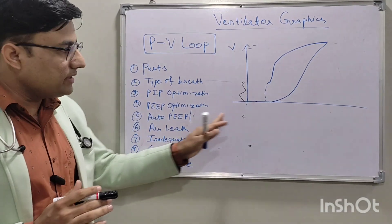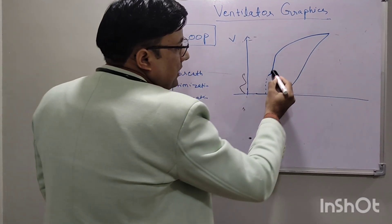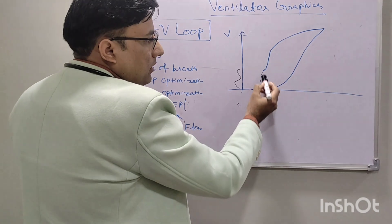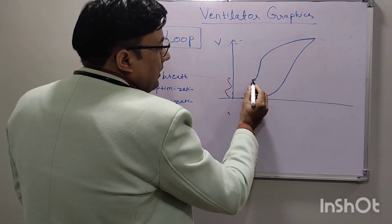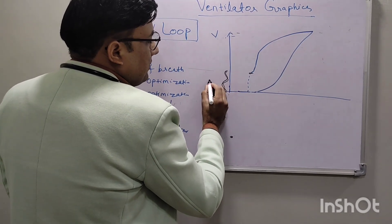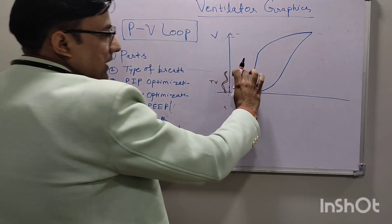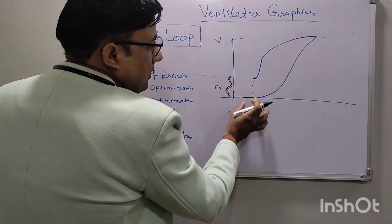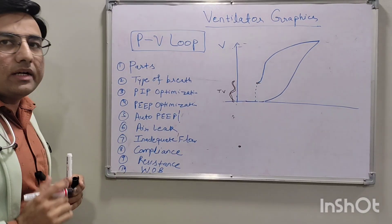We can also detect air leak in this graphic. During the expiratory phase, if the expiratory curve does not return to the baseline — it finishes before reaching baseline — then some tidal volume has been lost. This indicates there is a peritubular leak. The expiratory curve not returning to baseline is a sign of air leak.